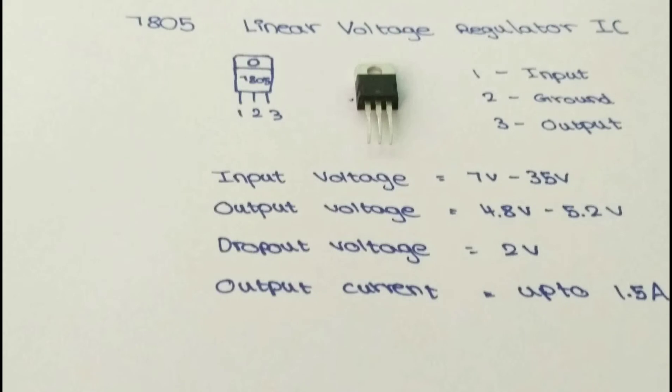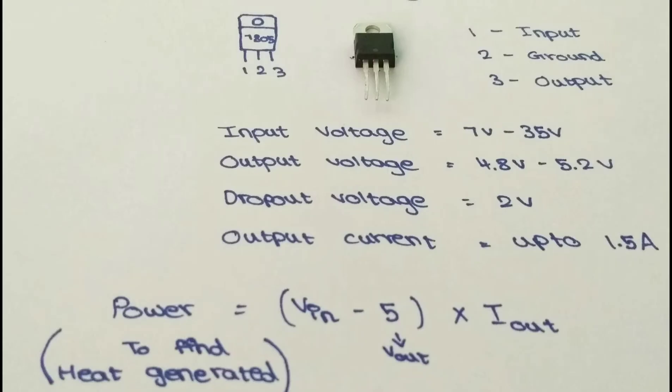Since the dropout voltage is 2 volts, that is why you should give a minimum of 7 volts to get the 5 volt output. You can expect the output current up to 1.5 amps.